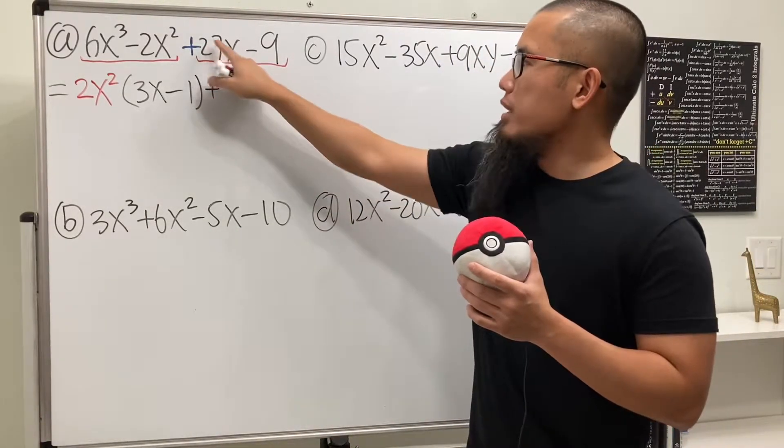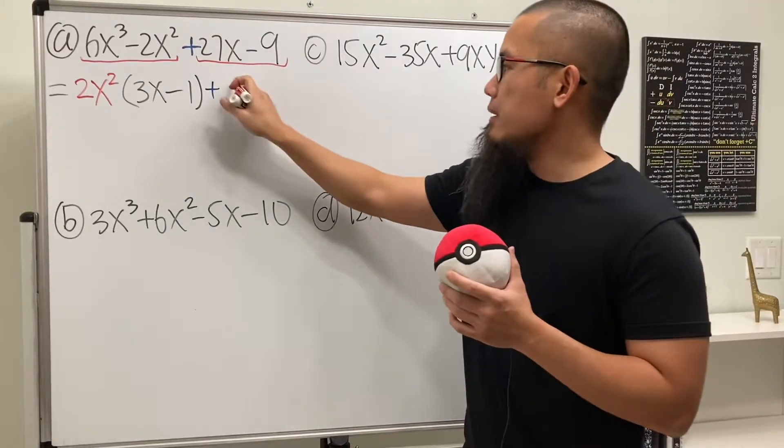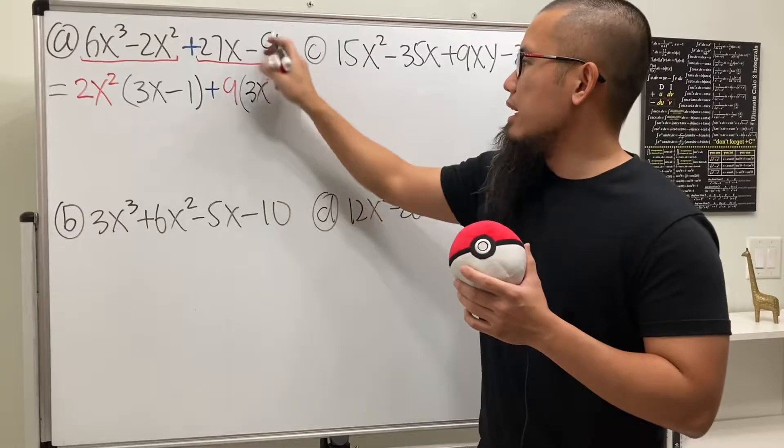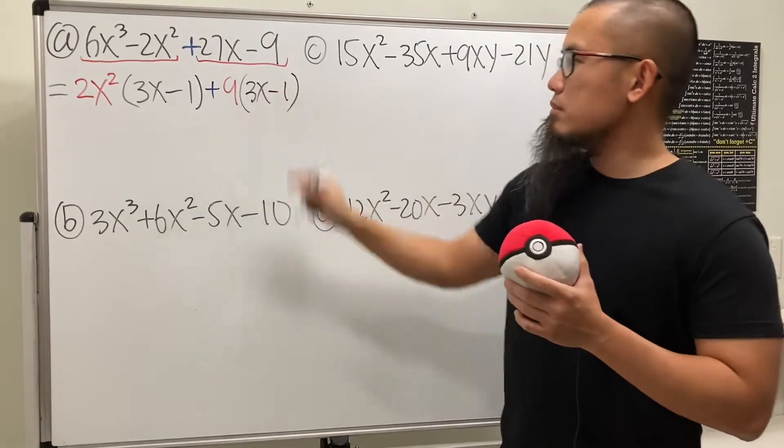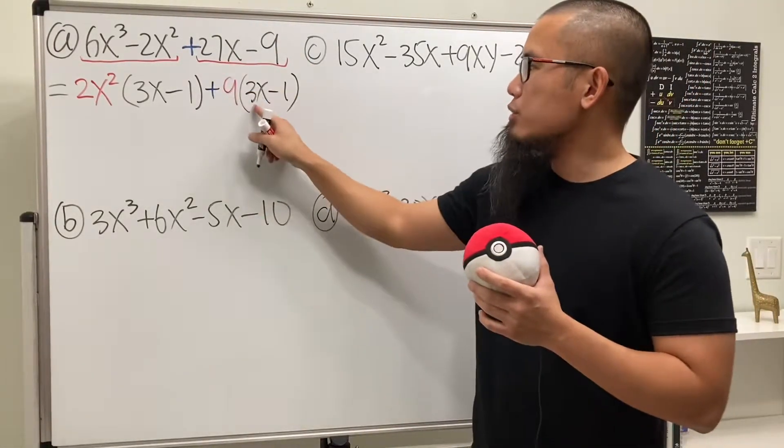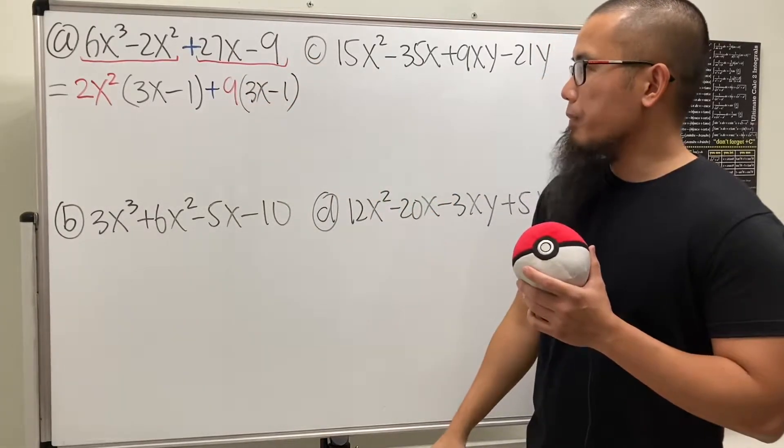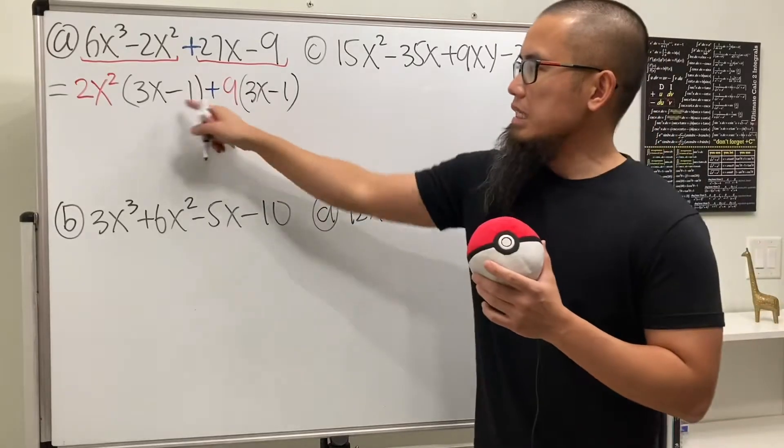But anyway, in terms of the number, 27 and 9, we can factor out the 9. And then we'll just have 3x and then minus 1. 27 divided by 9 is 3, and then we have the x. 9 divided by 9 is 1. Cool. And then we see this and that are the same.